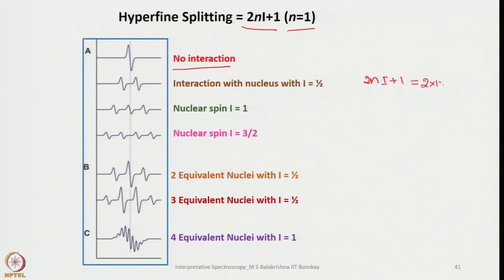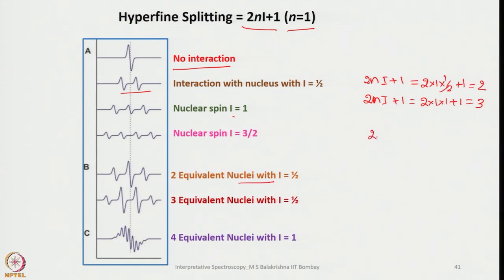We see two lines here, and similarly when the nuclear spin i equals 1 we observe three lines, and in case of spin 3/2 we observe four lines. When we have two equivalent nuclei with spin i equals half, we expect three lines. Similarly, three equivalent nuclei with i equals half gives four lines, and four equivalent nuclei with i equals 1 gives nine lines. This is how we understand hyperfine splitting by applying the 2Ni+1 rule.